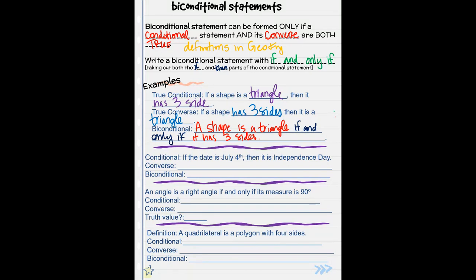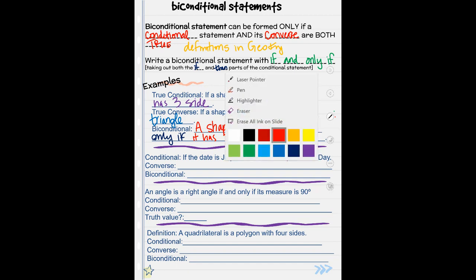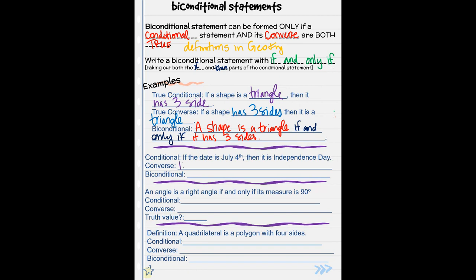Conditional statement example: if the date is July 4th, then it is Independence Day. Let's pretend we're only in America when we are evaluating whether they are true or not. If the date is July 4th in America, then it is Independence Day. Is that true? Yes, that's true.